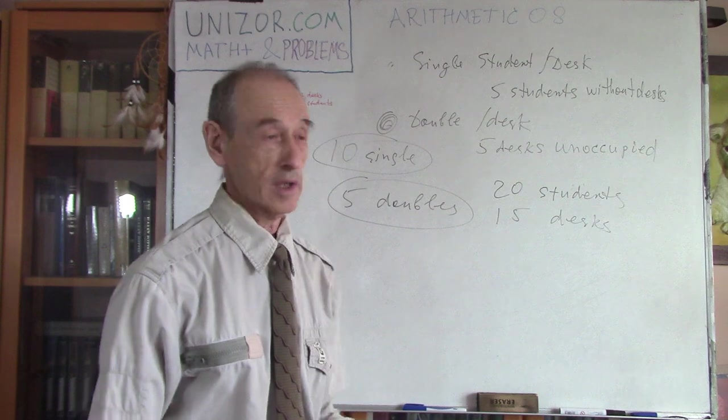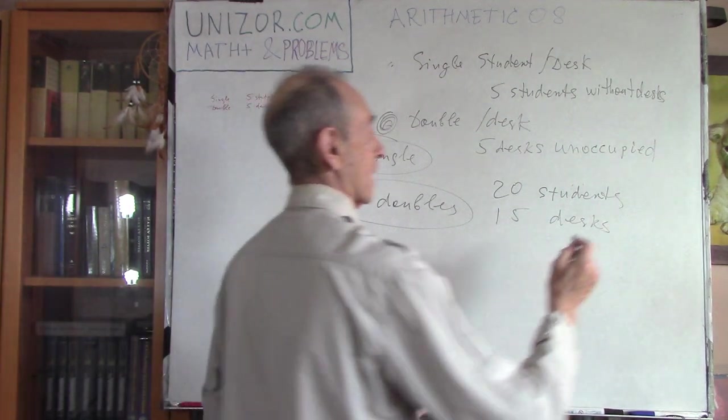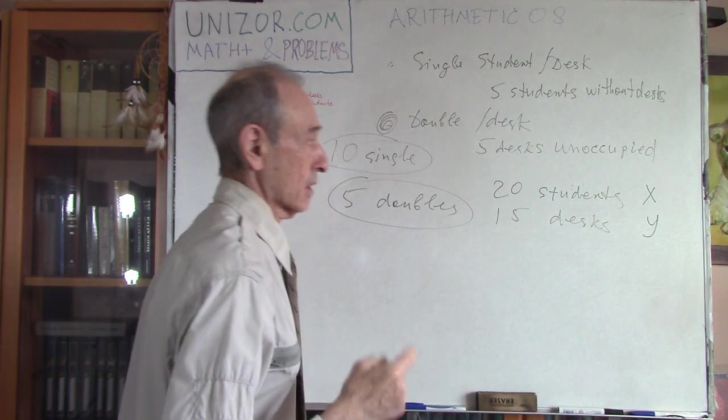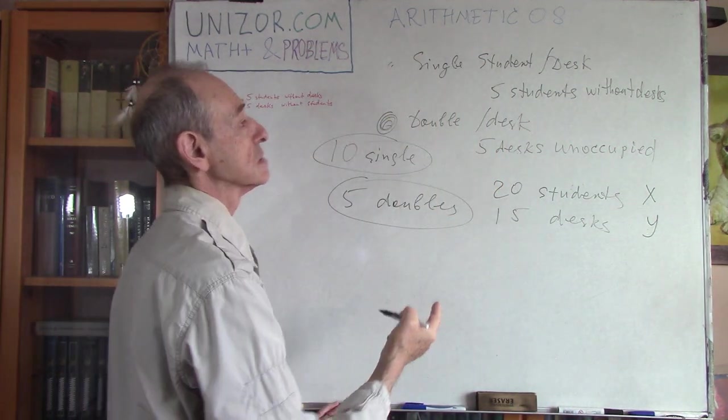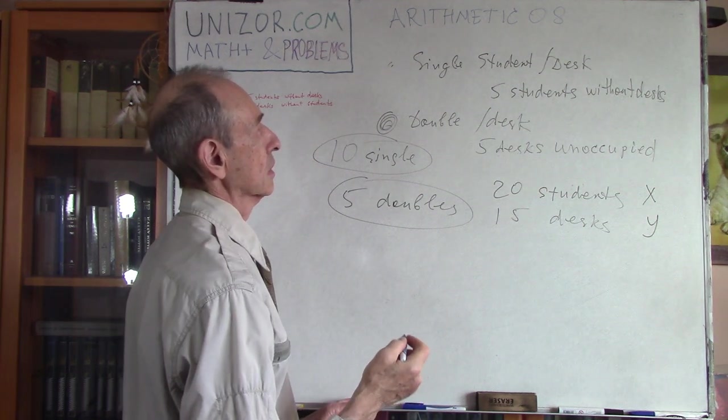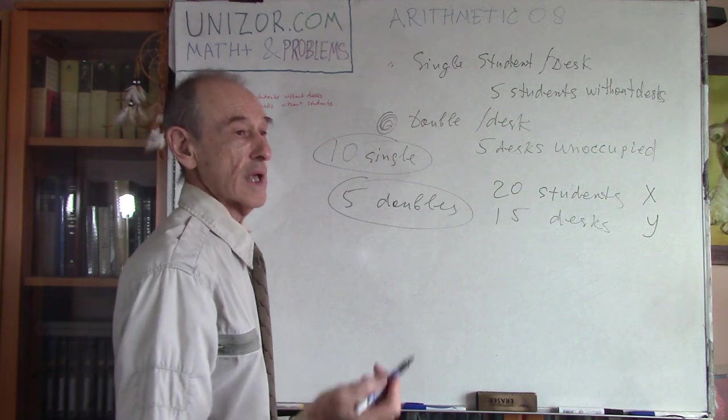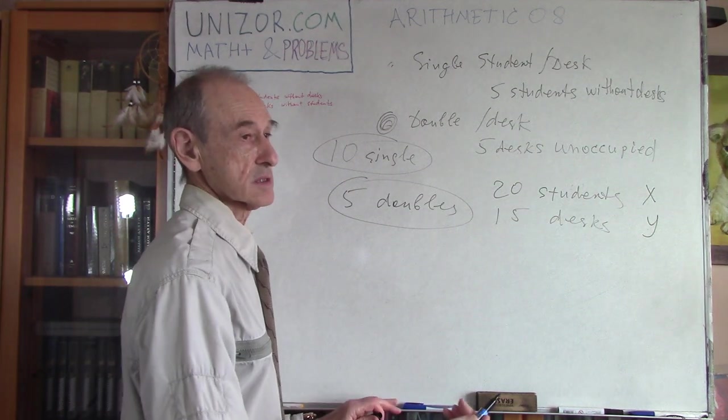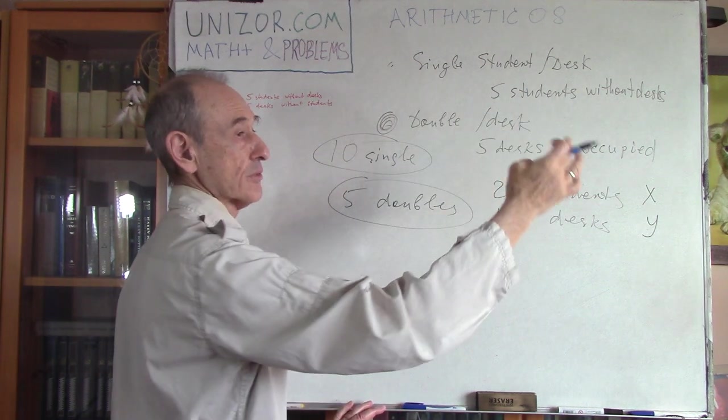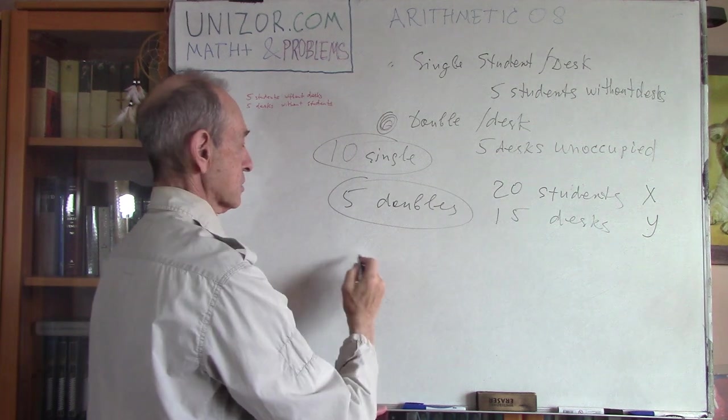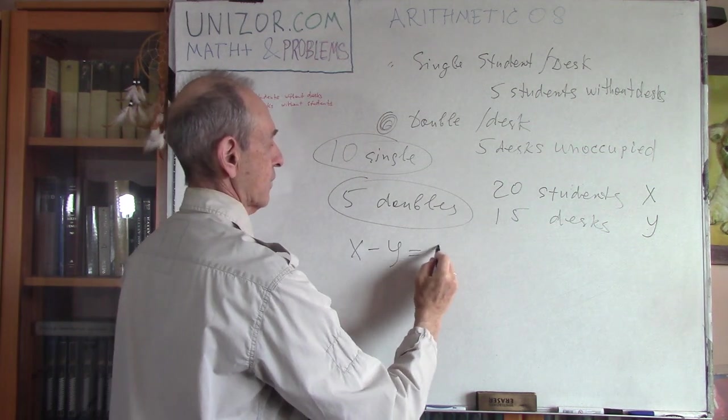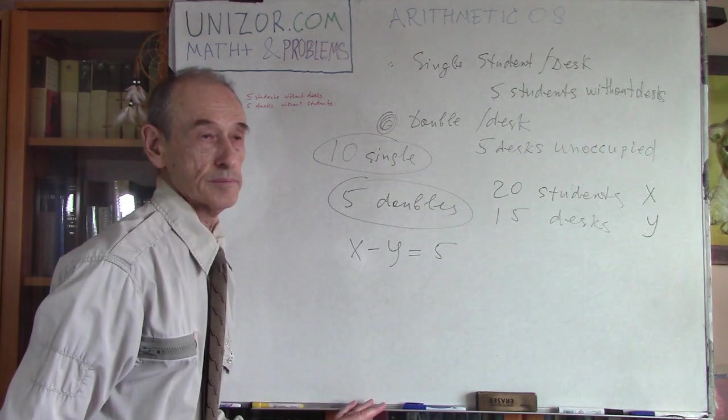It can be done algebraically. Okay, let's consider we have x students, and you have y desks. Okay, so the first condition means that the number of students exceeds the number of desks by five, right? If you put one student per desk, you will have five students without. So it means x minus y equals five.